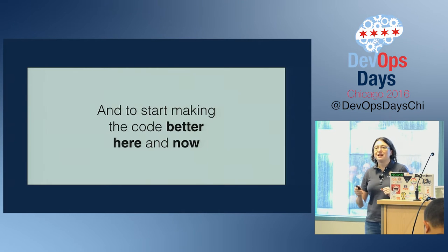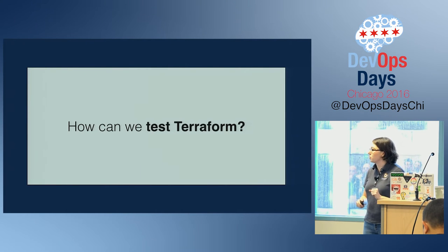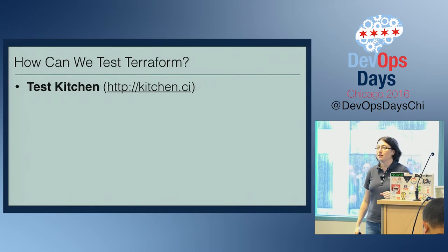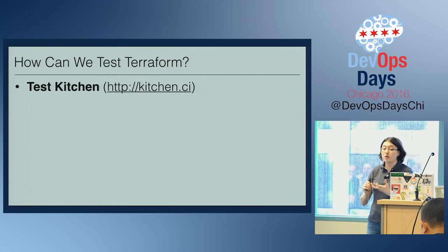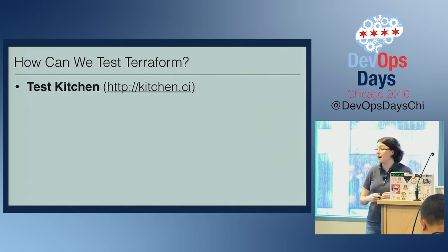So how can we test Terraform? I'm going to harness three open source tools. The first is Test Kitchen — a tool that allows us to spin up a VM or container, configure it with our Terraform config, and run tests on it to verify our code did what we expected. Find out more at kitchen.ci. Test Kitchen was originally written for Chef Cookbooks, but it can also be used with Puppet Manifests, Ansible Playbooks, and more.